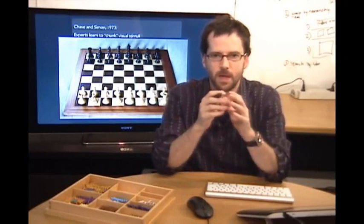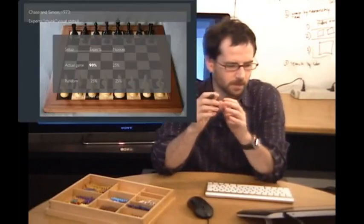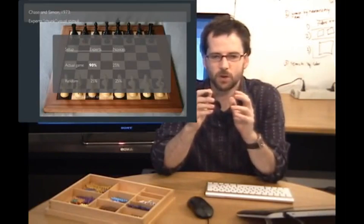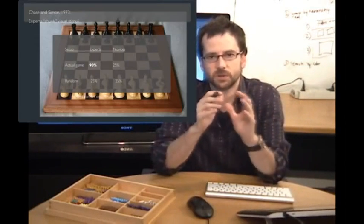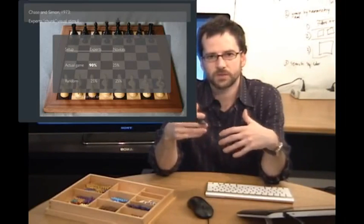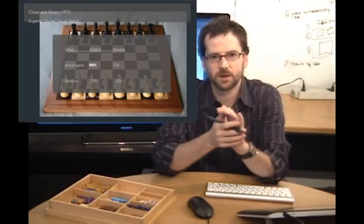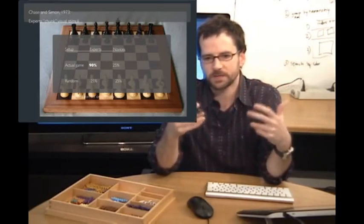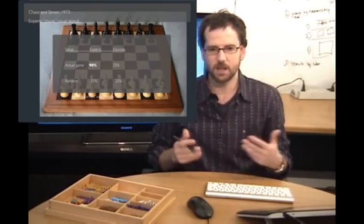Neither turns out to be the case. Experts are much better at remembering the configuration of a board, but only if it's an actual game. If the configuration of the chess board is the configuration that a chess board could be, experts do a fantastic job of remembering it. But if you arrange the pieces on the board in a way that chess play could not ever achieve, the experts actually do no better than novices at all. What we're seeing is that the ability of experts to chunk things and have higher memory capacity is because they're able to leverage their knowledge about the domain.